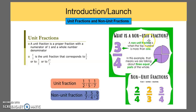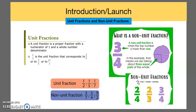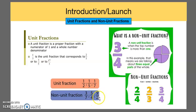What is a non-unit fraction? A non-unit fraction is when the top number is more than one. So in this case, we have three-fourths. Two-fourths would also be fine as well. In this example, that means that we're talking about three equal parts of a whole. Additional examples of non-unit fractions would be two-fourths, two-thirds, and three-fourths. Other examples include three-sevenths, five-fourths, and nine-halves.